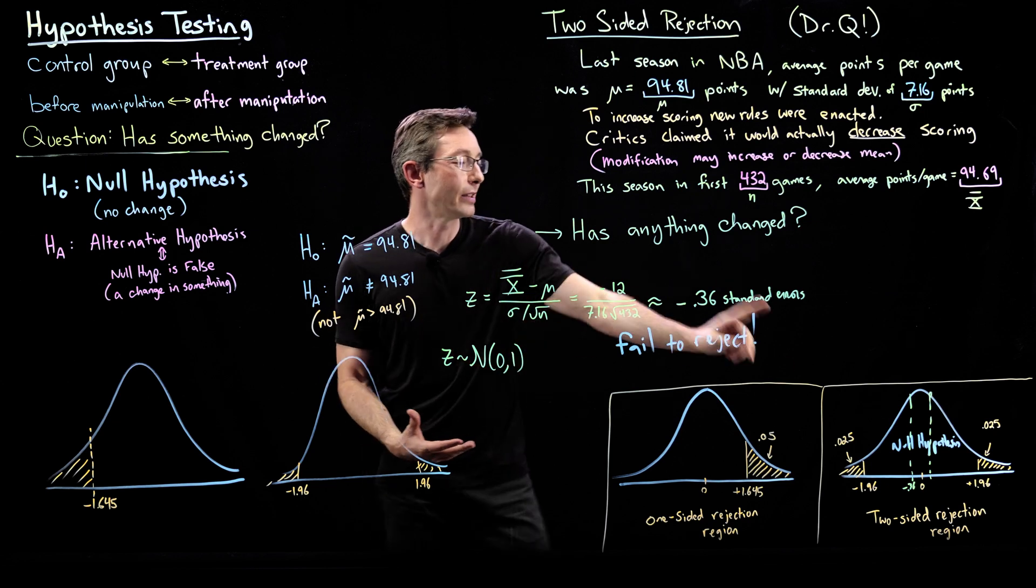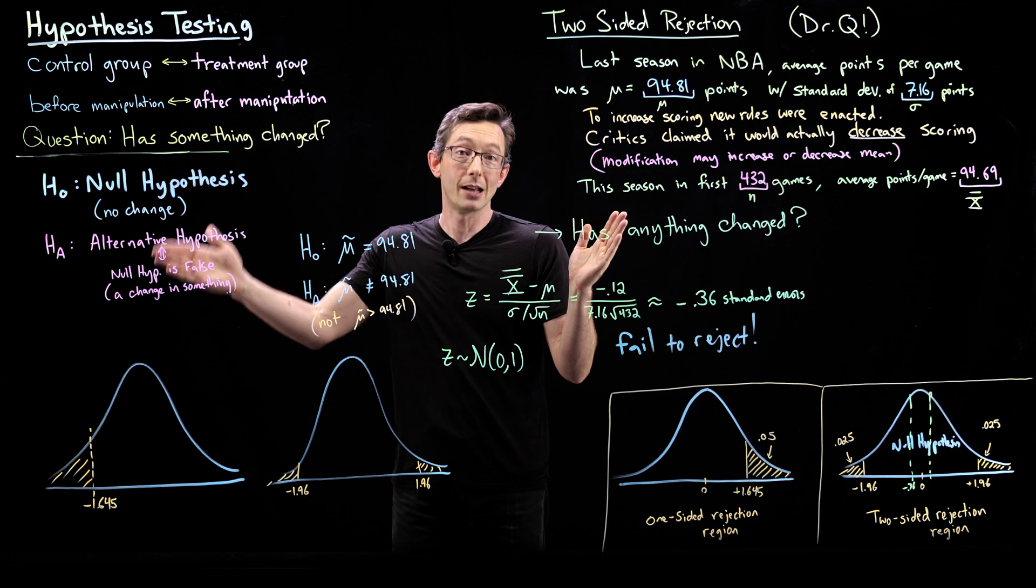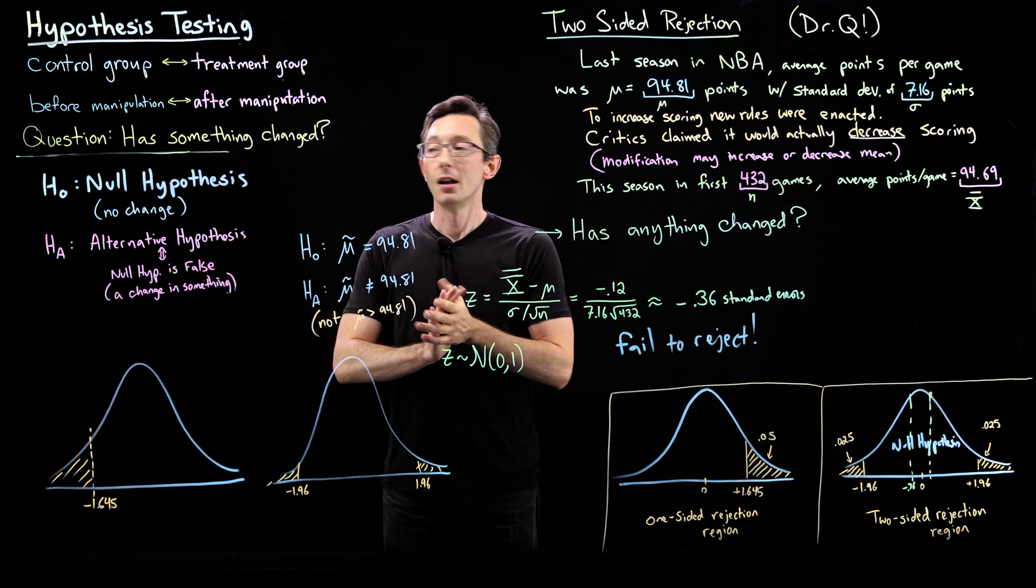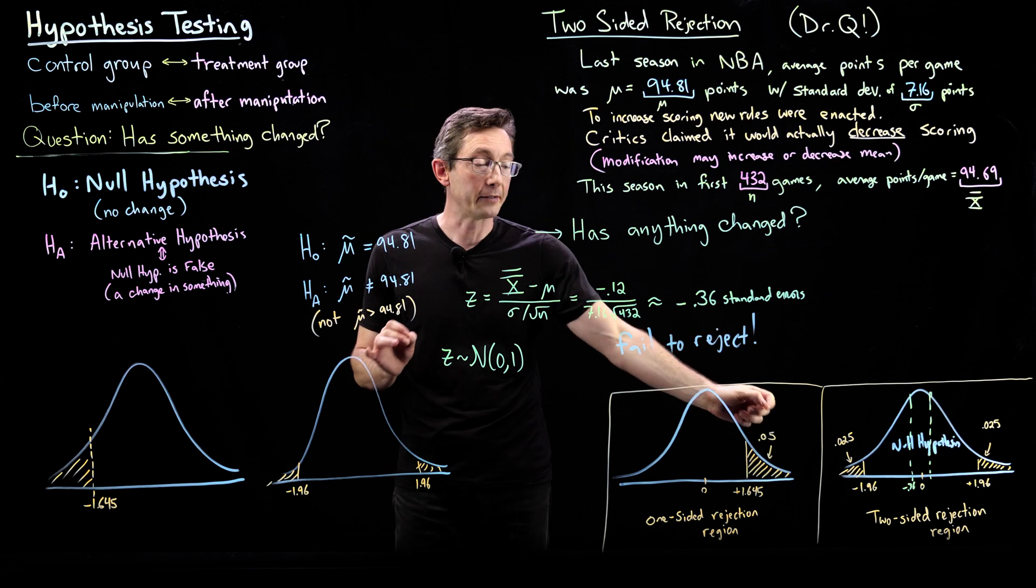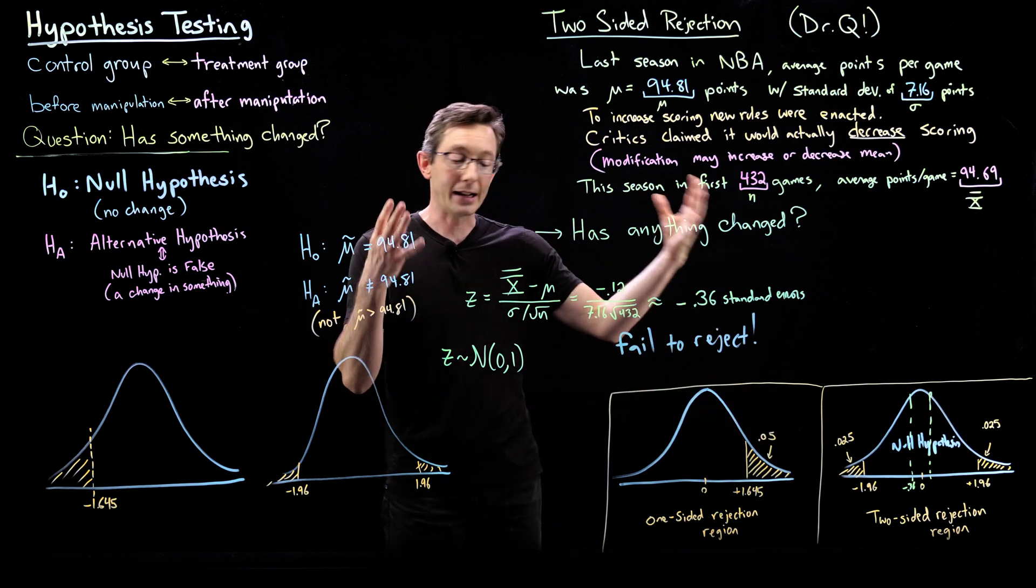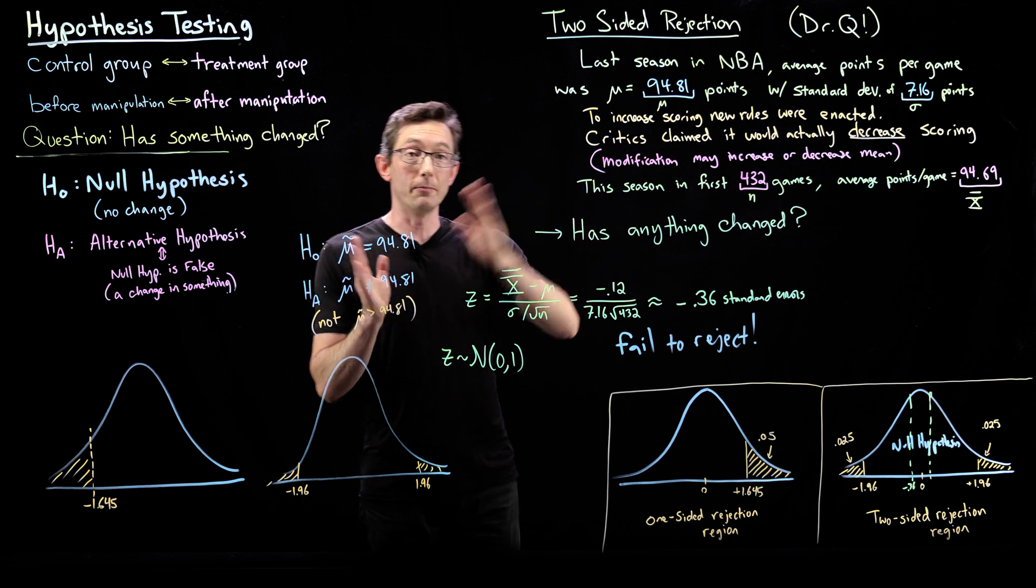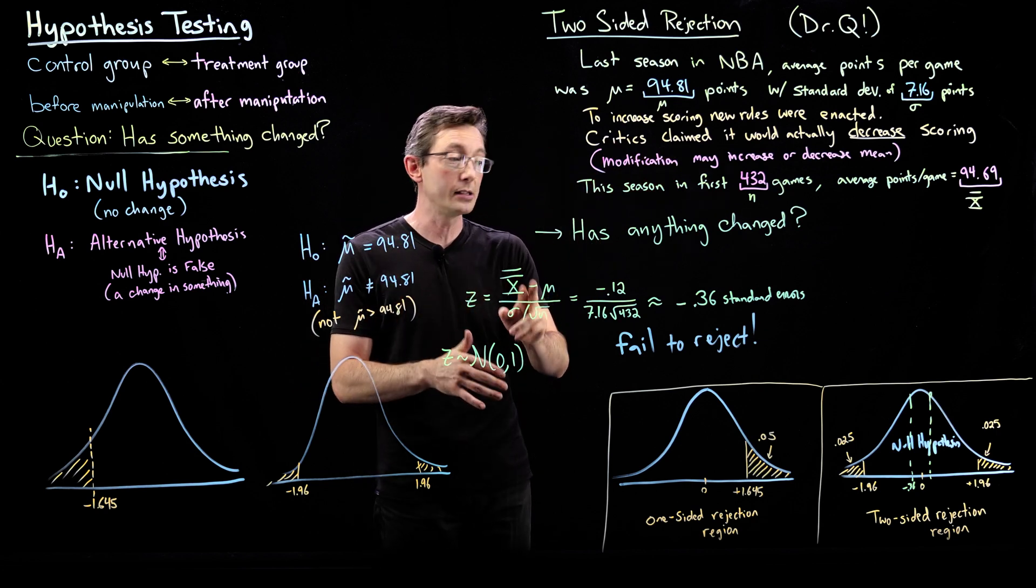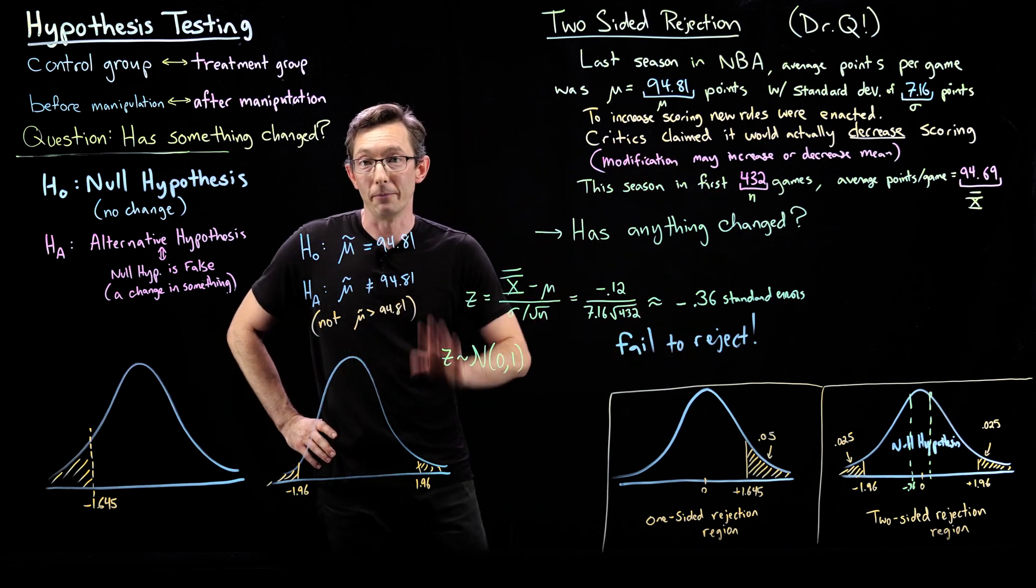I'm going to claim that's a two-sided test because they might be more lucky than average or less lucky than average. Two-sided tests are important. It's important to know the difference and when to apply them. And again, it always boils down to this test statistic, at least when we're comparing means of distributions, and how many standard errors away you are. Thank you.